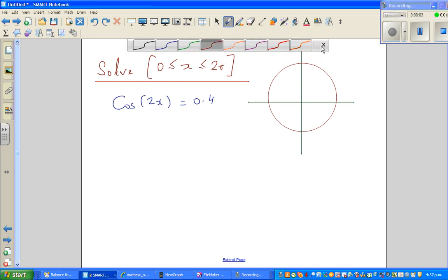Continuing with solving trig equation, this is the equation: cos of 2x, or cos 2x is 0.4. And we want to write the answers in radians, so x should be between 0 and 2π.